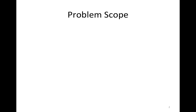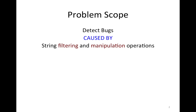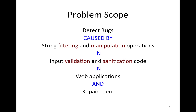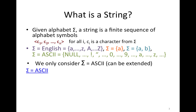Let me start by defining the problem scope. In this talk, I'm going to show how to detect bugs that are caused by string filtering and manipulation operations in input validation and sanitization code in web applications, and of course, repairing them automatically. So, let me start by defining what a string is. Given an alphabet, which is a set of characters, a string is a finite sequence of alphabet symbols.